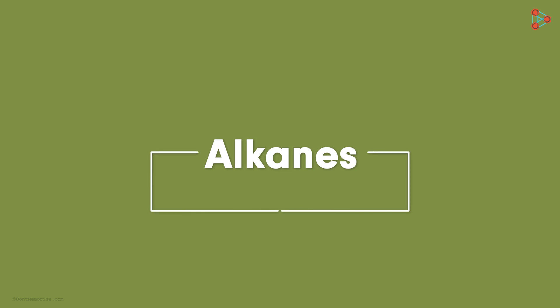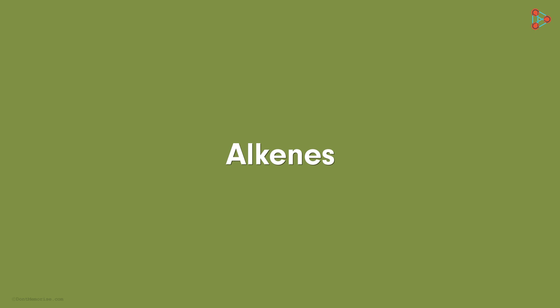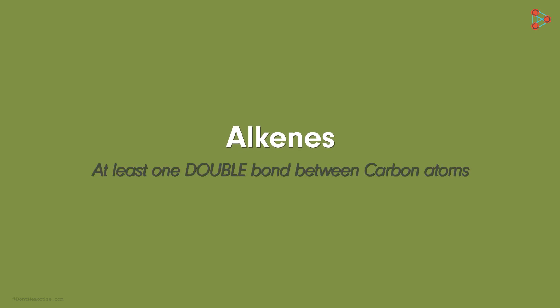After learning about alkanes, which are saturated hydrocarbons, it's time to learn about unsaturated hydrocarbons. The first family is alkenes, which have at least one double bond between carbon atoms.